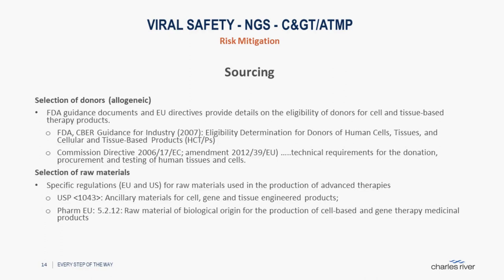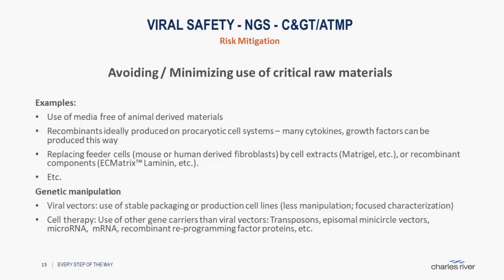To mitigate the risk of critical materials, you can avoid and minimize the use of critical materials. Media are already available that do not contain any animal-derived materials. You can use recombinant cytokines or hormones produced on prokaryotic cell systems — many cytokines and growth factors can be produced this way. Another example is replacing feeder cells by moving to cell extracts, though the risk is still high, or even moving to recombinant components to replace those feeder cells.